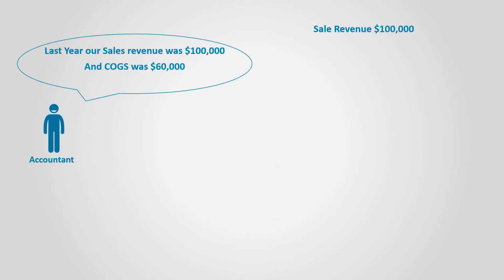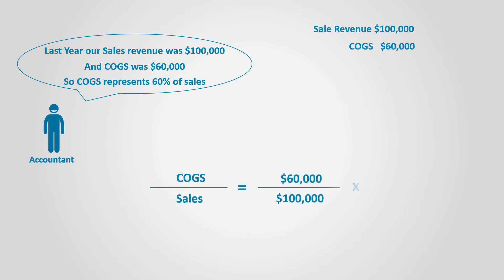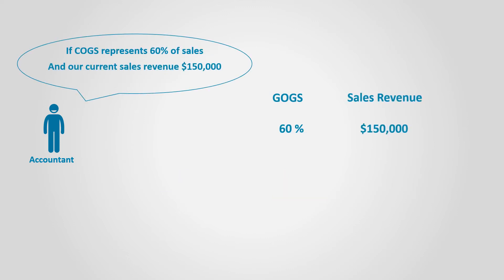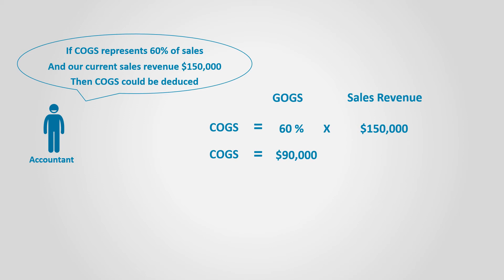Based on the previous period's sales and cost of goods sold, we can estimate the percentage of cost of goods sold to sales. The percentage is calculated by dividing the cost of goods sold by sales — in this case it is equal to 60%. Knowing that the current period sales revenue is $150,000, the current period cost of goods sold could be calculated by multiplying this percent by the current sales revenue, assuming the percent is the same as last period. So cost of goods sold will be equal to $90,000.